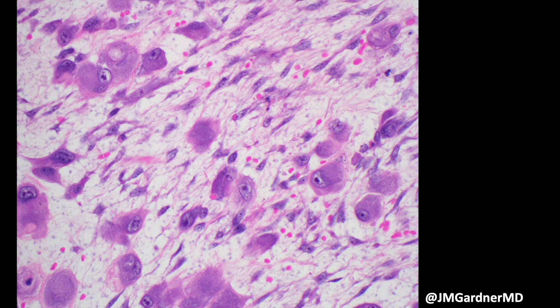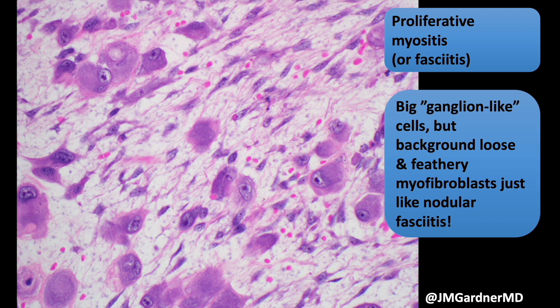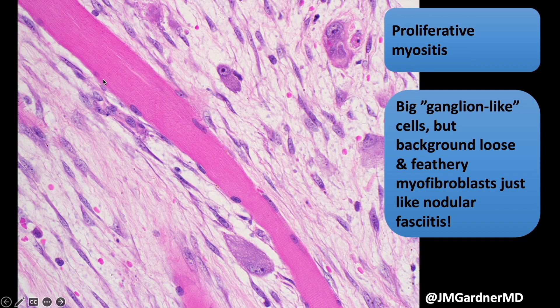Finding scattered ganglion-like cells in a background that looks like nodular fasciitis is really reassuring of a benign diagnosis — because otherwise these cells look really scary and weird. Even though they're big and atypical, they're not hyperchromatic; they still have that open chromatin. The background changes are everything, and of course the clinical context must make sense. In children with proliferative myositis or fasciitis it can be quite cellular with closely packed ganglion-like cells — those cases I still approach with great trepidation and anxiety.